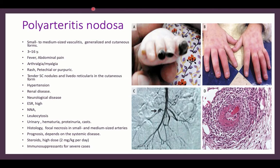Polyarteritis nodosa is a small-to-medium-sized vasculitis that can be generalized or in a cutaneous form only, presenting with skin manifestations and nodules. The age range of 3 to 60 years has a predilection for polyarteritis nodosa. It presents with fever, abdominal pain, myalgia, arthralgia. Skin disease can present with petechiae, peripheral lesions, tender subcutaneous nodules, and livedo reticularis. The cutaneous form has tender nodules along the pathway of blood vessels, which can progress to thrombosis and gangrene.